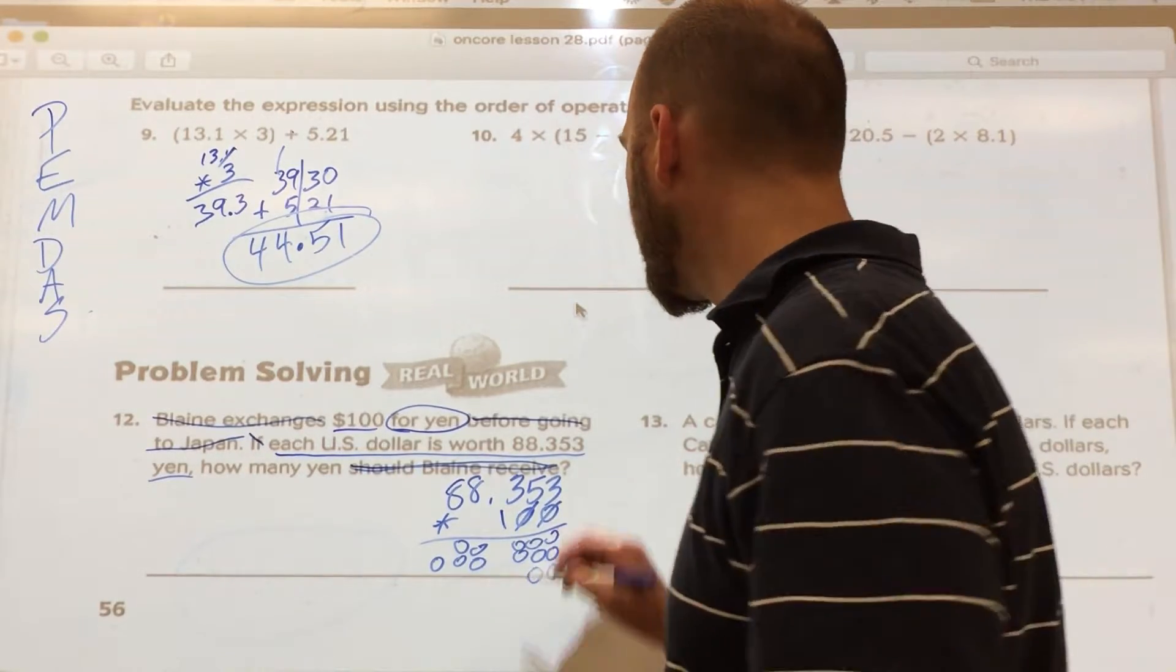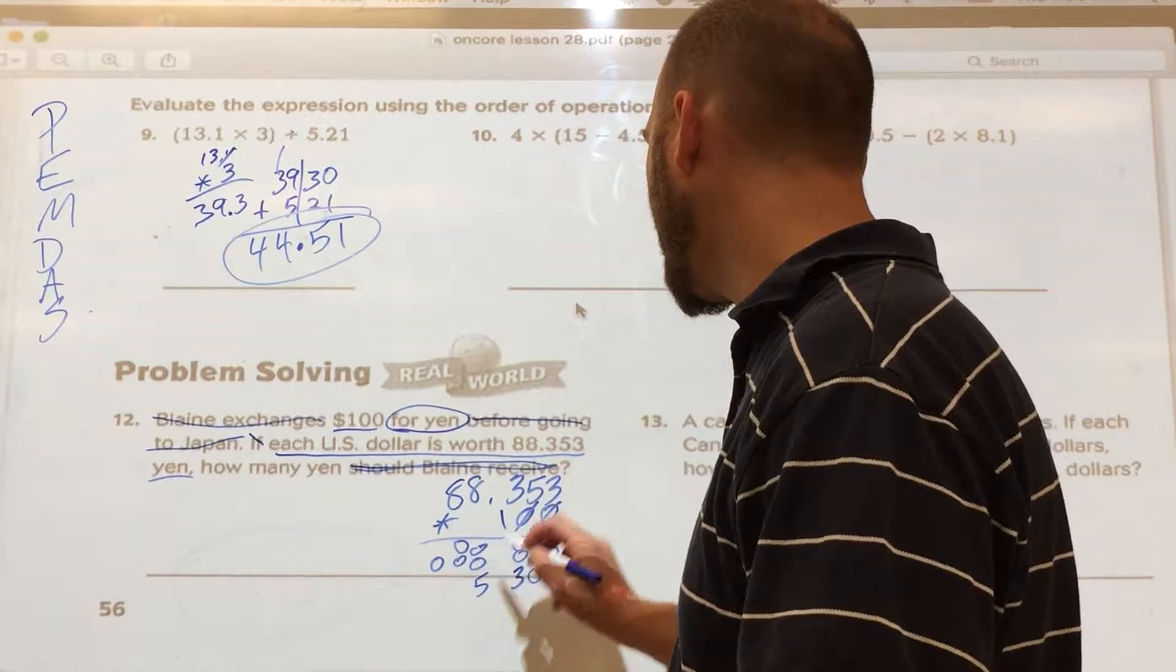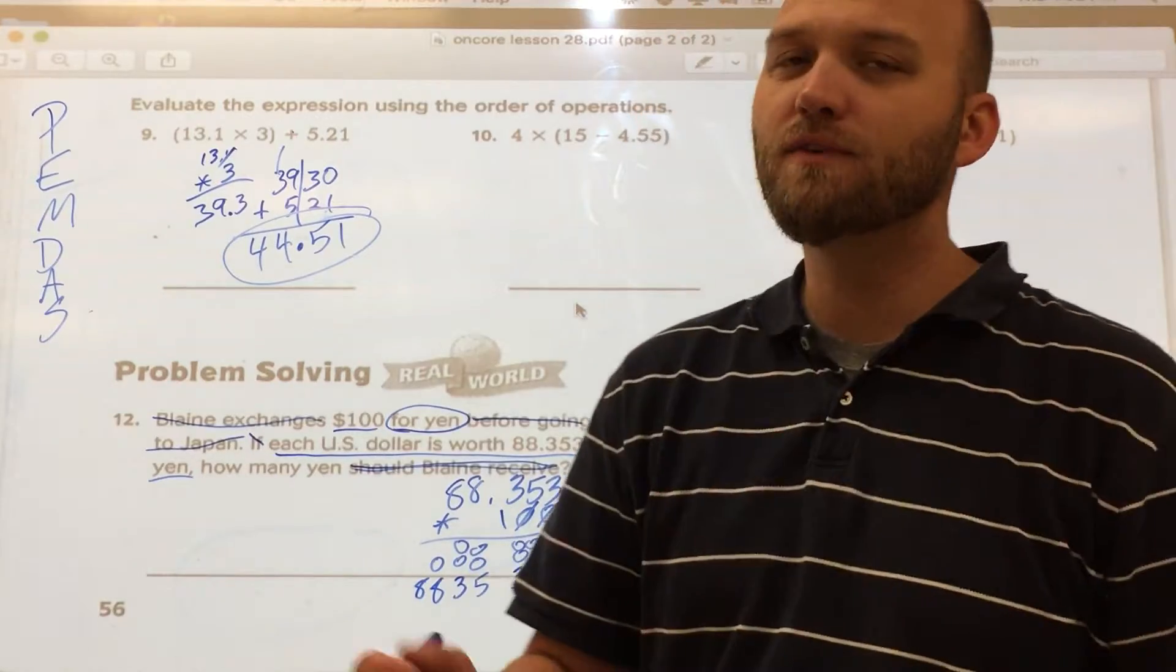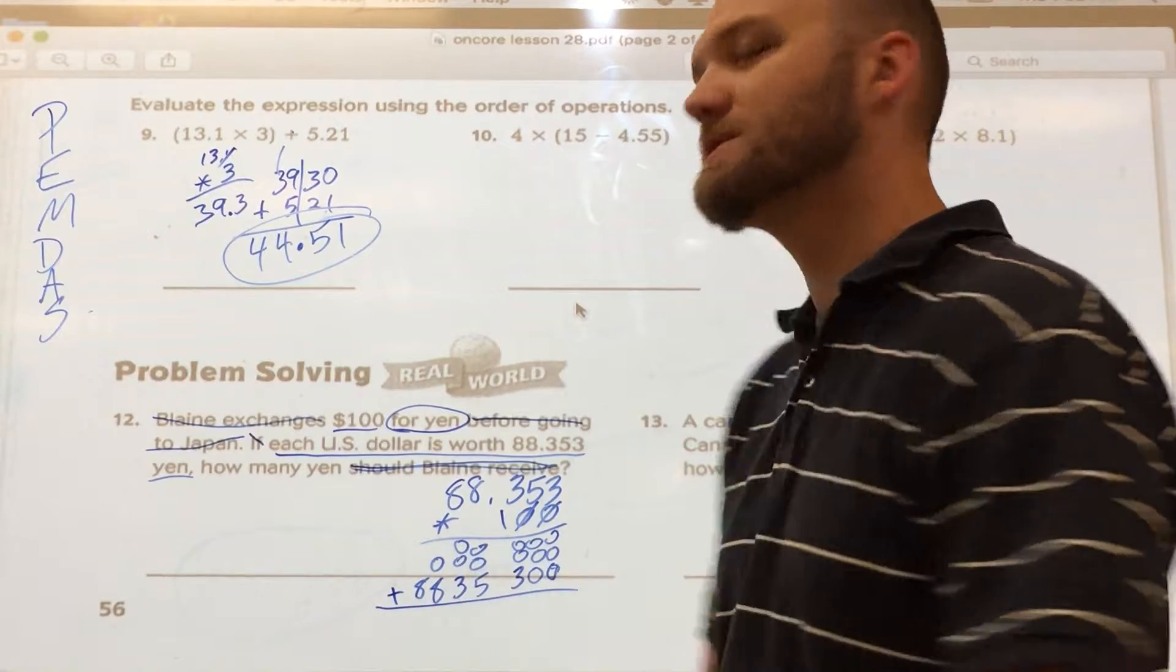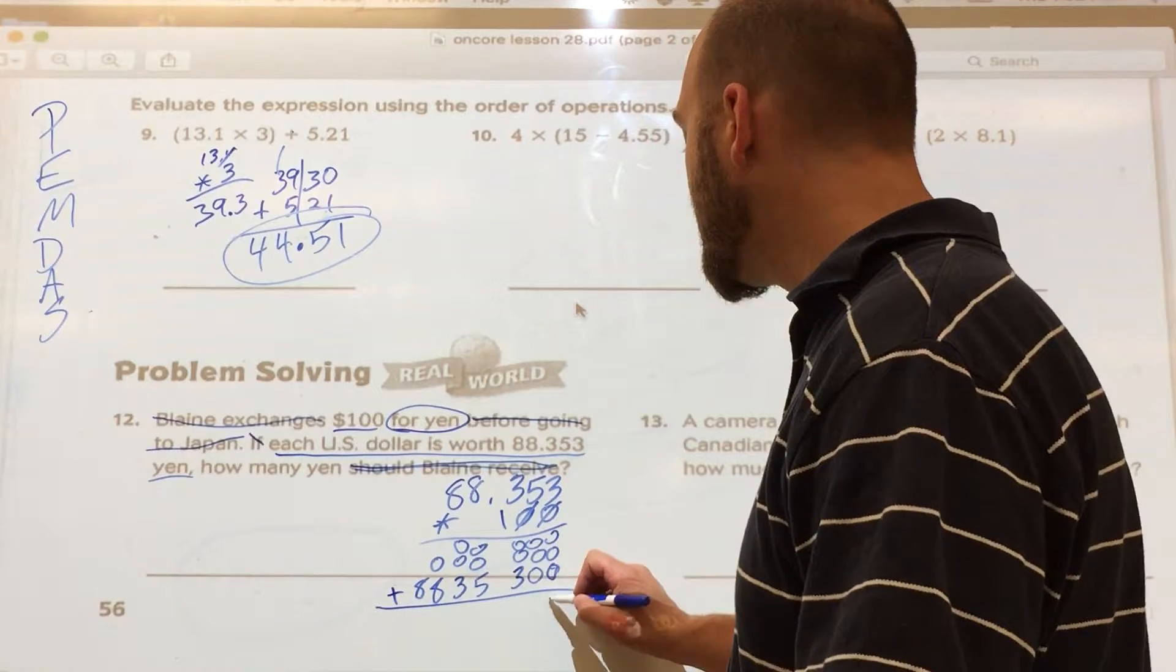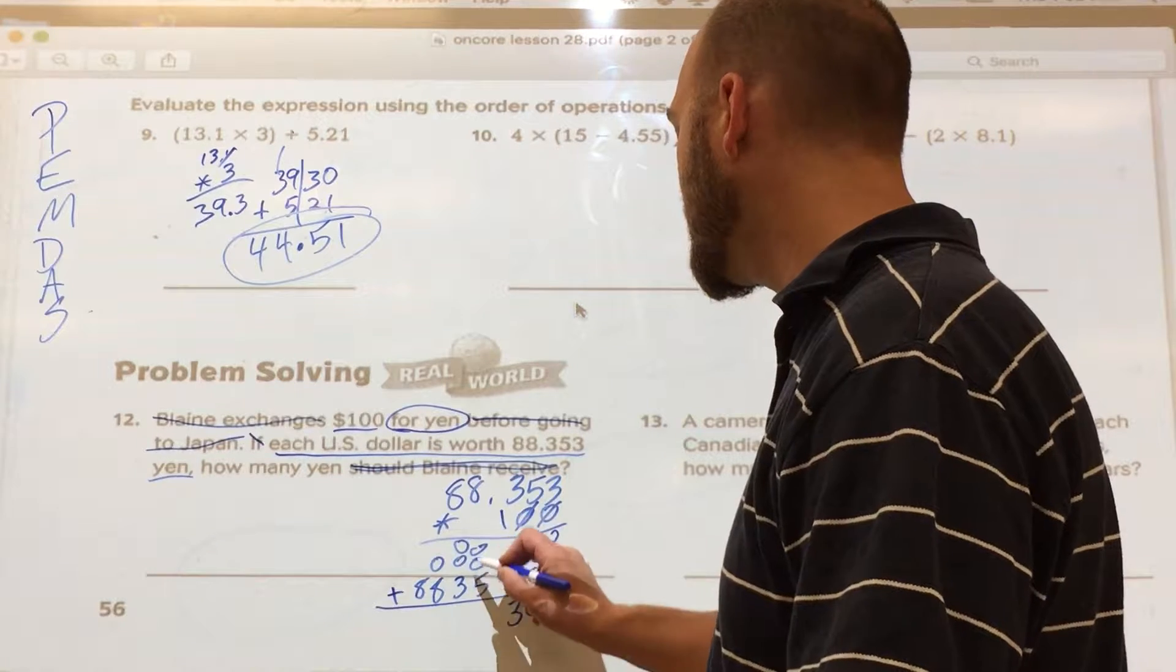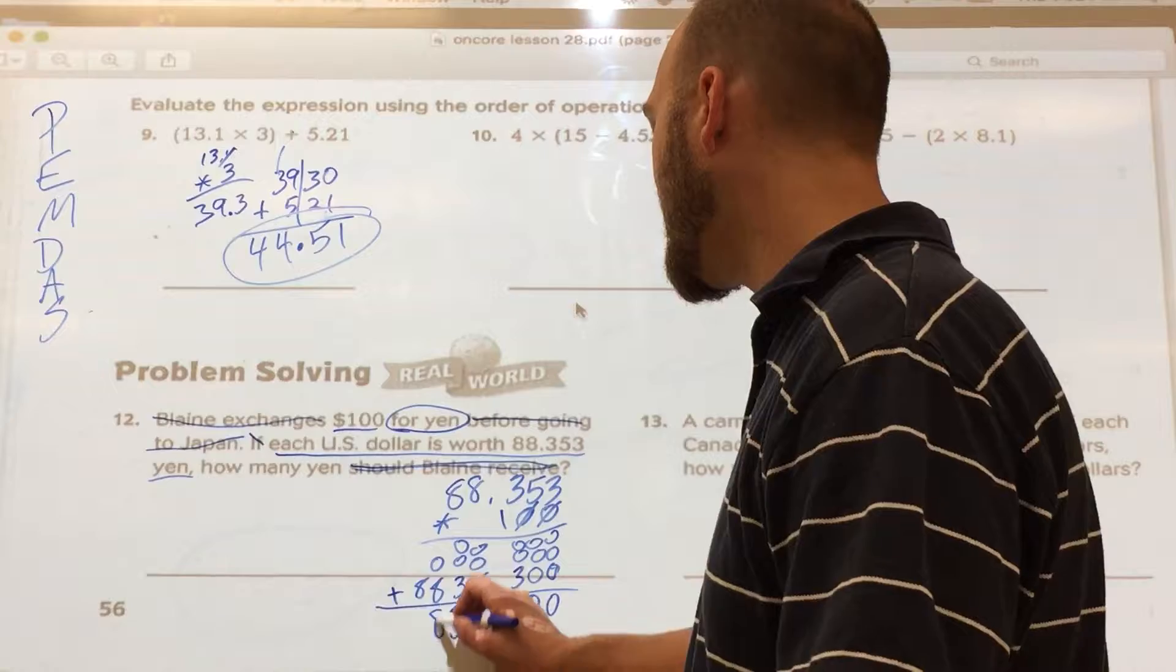Now I have 1 times 3 is 3, 1 times 5, 1 times 3, 1 times 8, 1 times 8. Again, if you need help with your multiples of 1, come see me. We'll review those. But I'm short-cutting this for the sake of time in the video. 0 plus 0 plus 3 is 3. 0 plus 0 plus 5 is 5. 0 plus 0 plus 3 is 3. 0 plus 8 is 8. And 8.